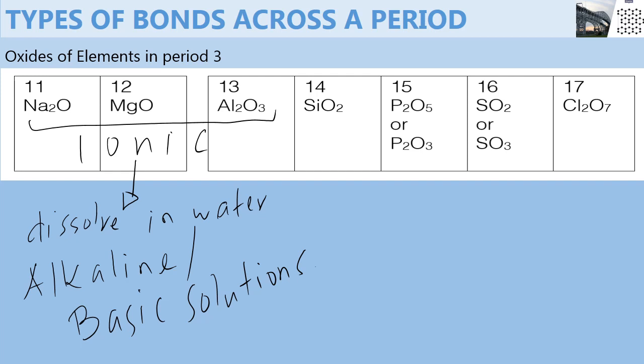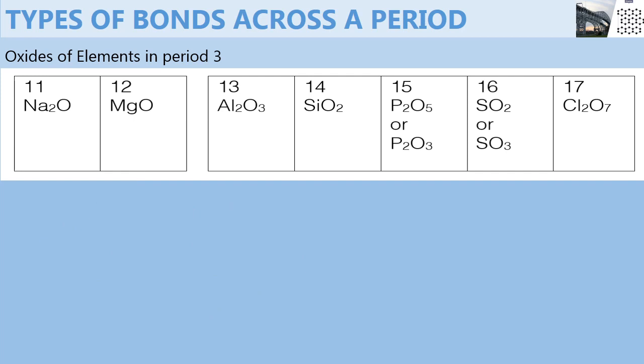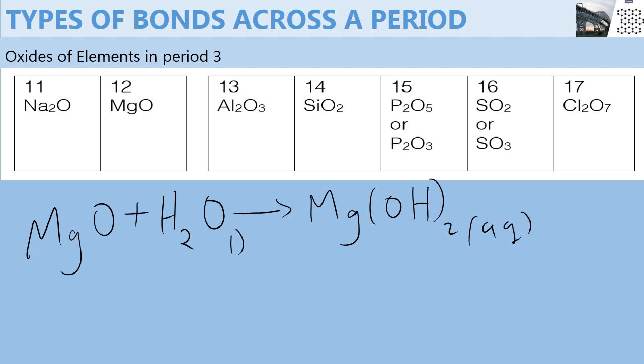This is because they essentially react with water to form their corresponding hydroxides. For example, magnesium oxide reacts with water to form magnesium hydroxide. And magnesium hydroxide is an alkaline or basic solution. Similar reactions will take place with sodium and aluminium.